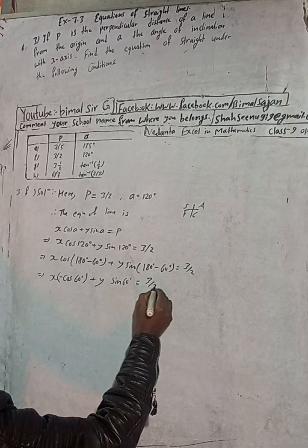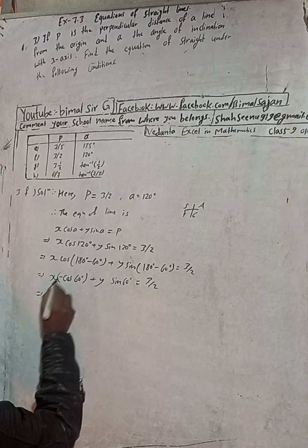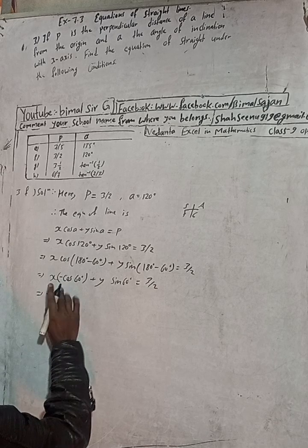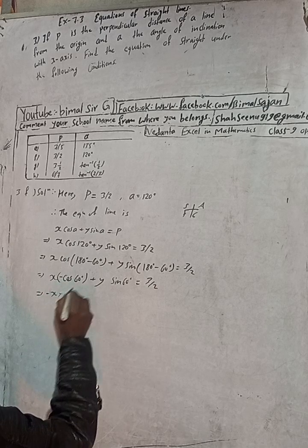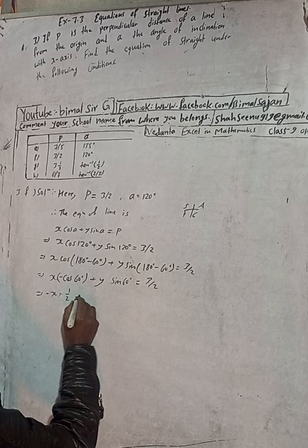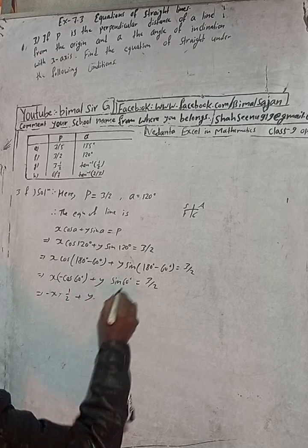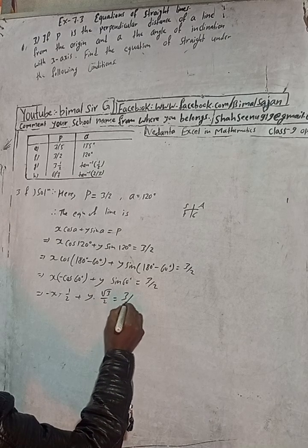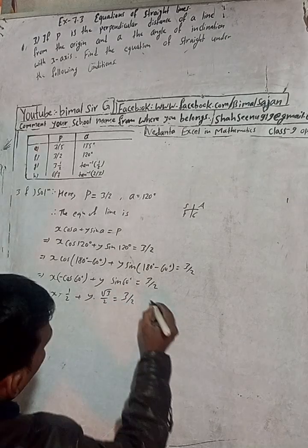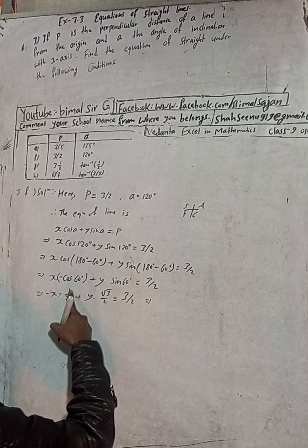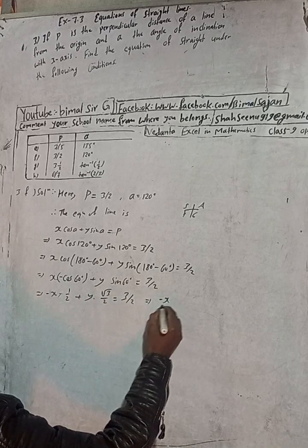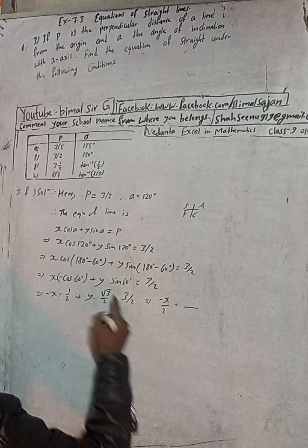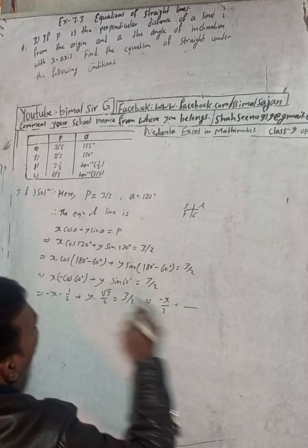Now substituting standard values: cos 60 = 1/2 and sin 60 = √3/2. So we get: minus x times 1/2 plus y times √3/2 equals 3/2. That simplifies to: minus x/2 plus y√3/2 equals 3/2.